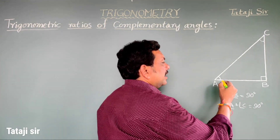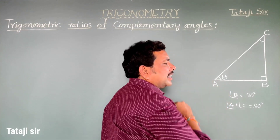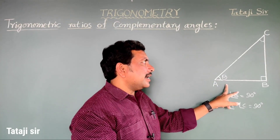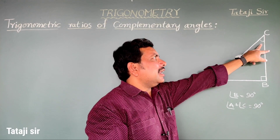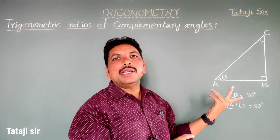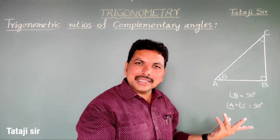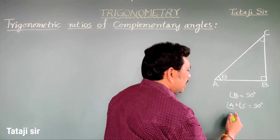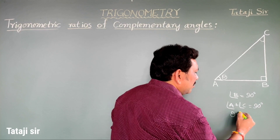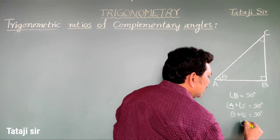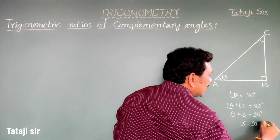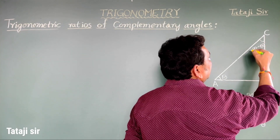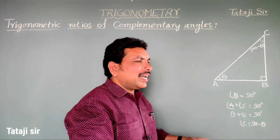If theta is an acute angle at A, then the angle at C will be 90 minus theta. Because substituting theta in place of A: theta plus C equals 90 degrees, so angle C equals 90 minus theta.